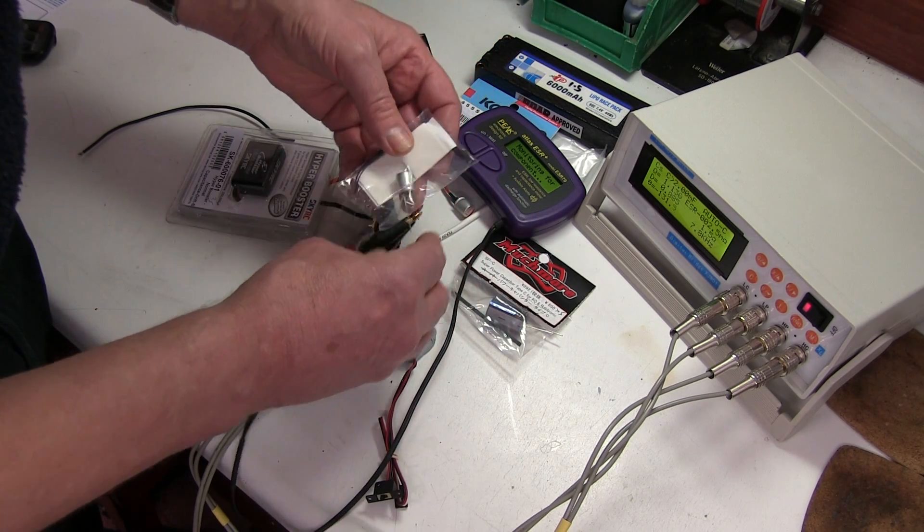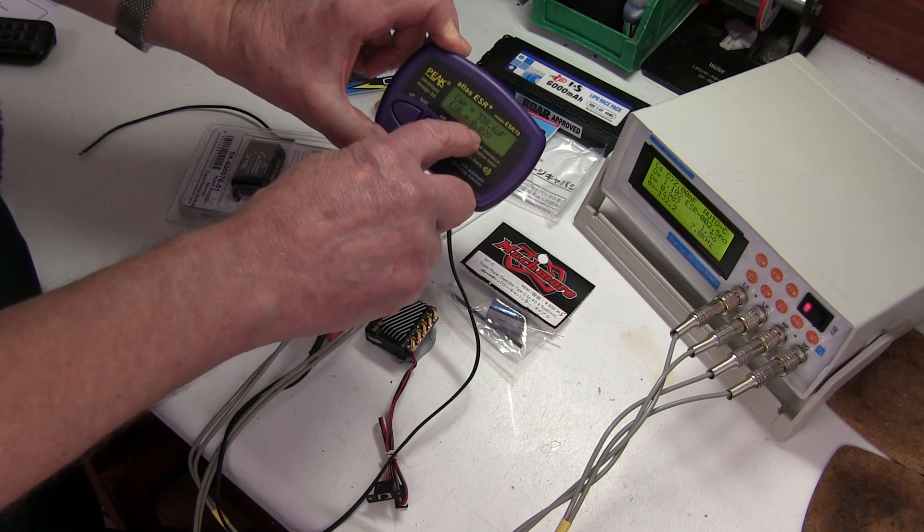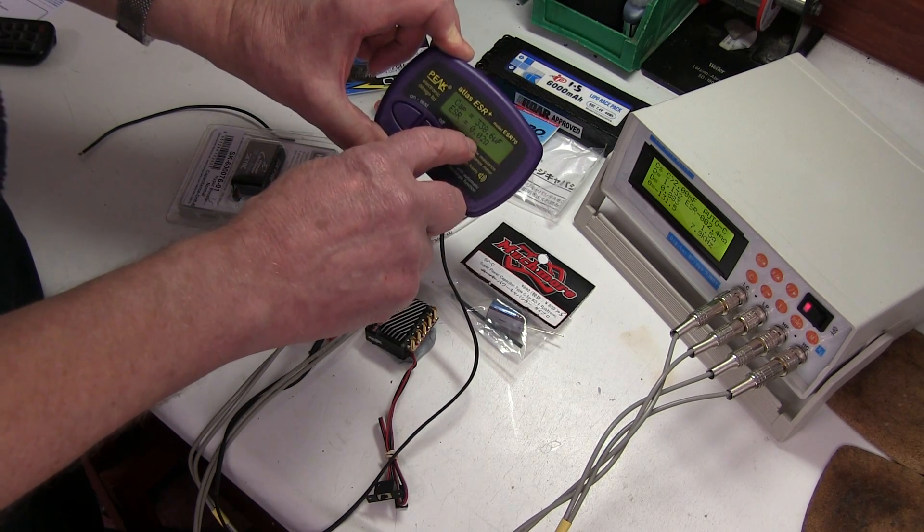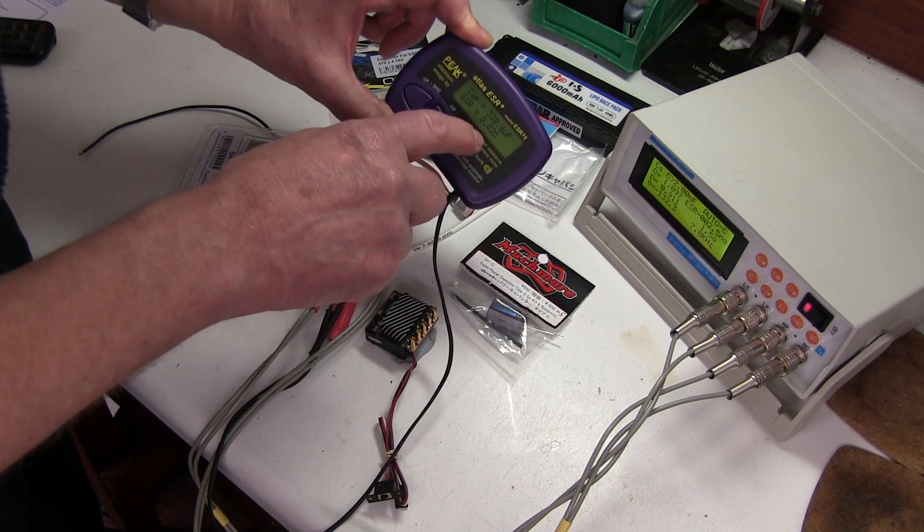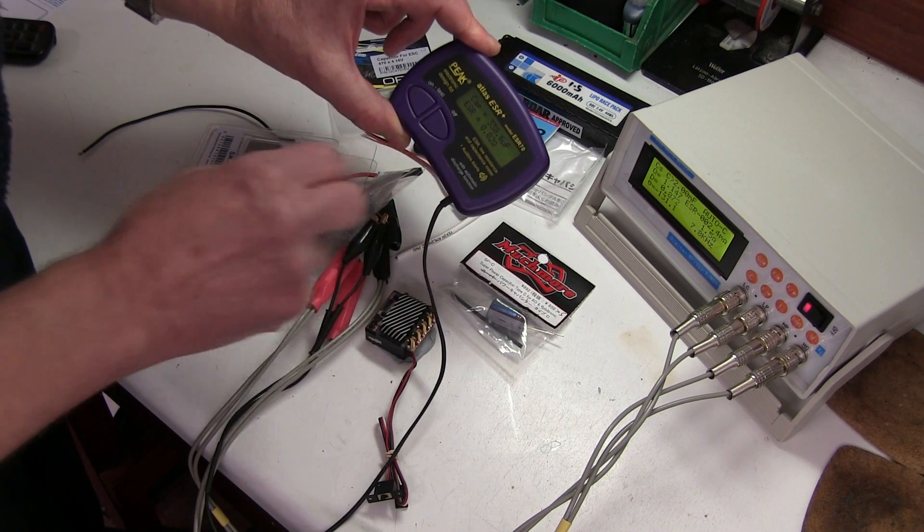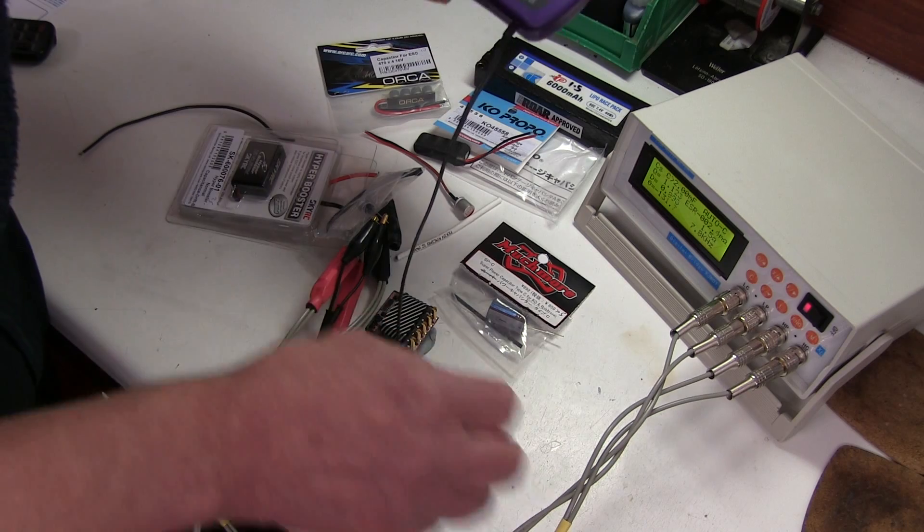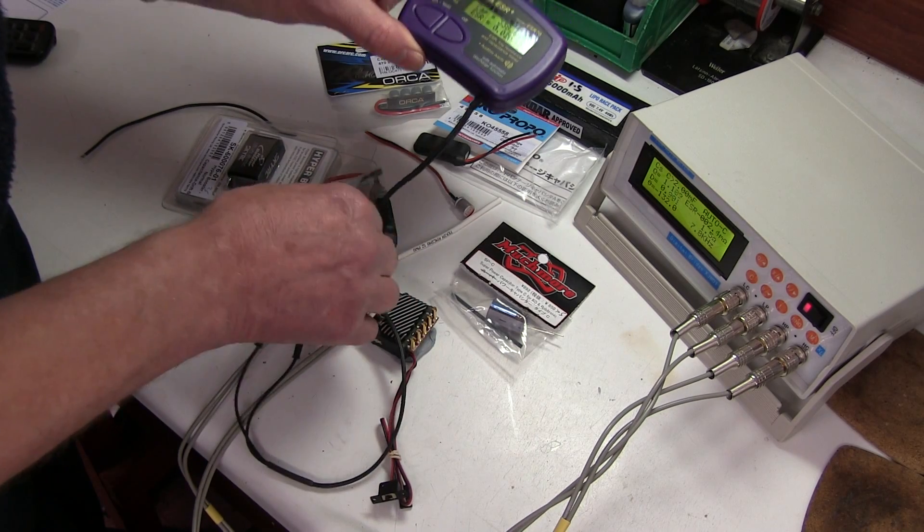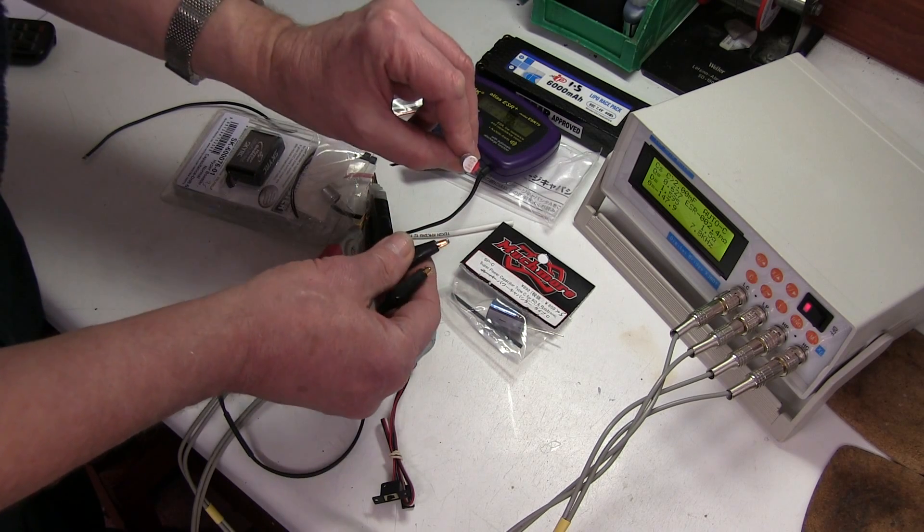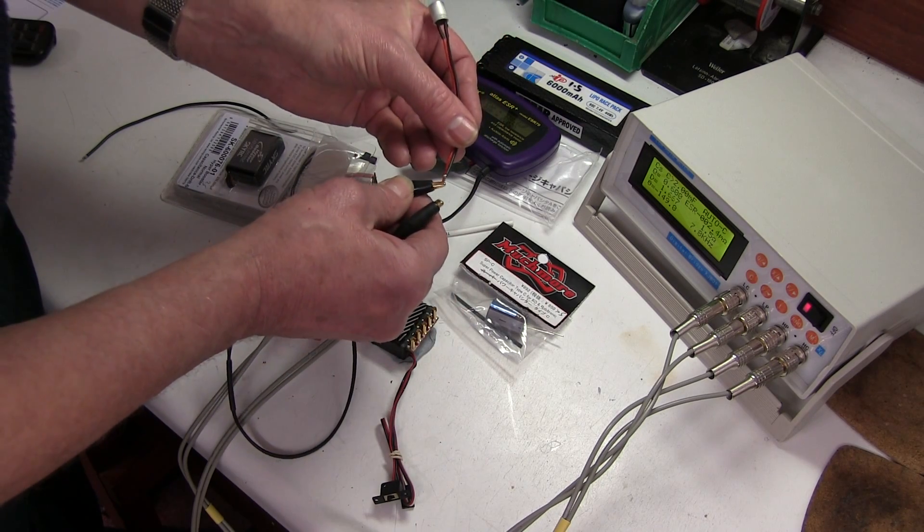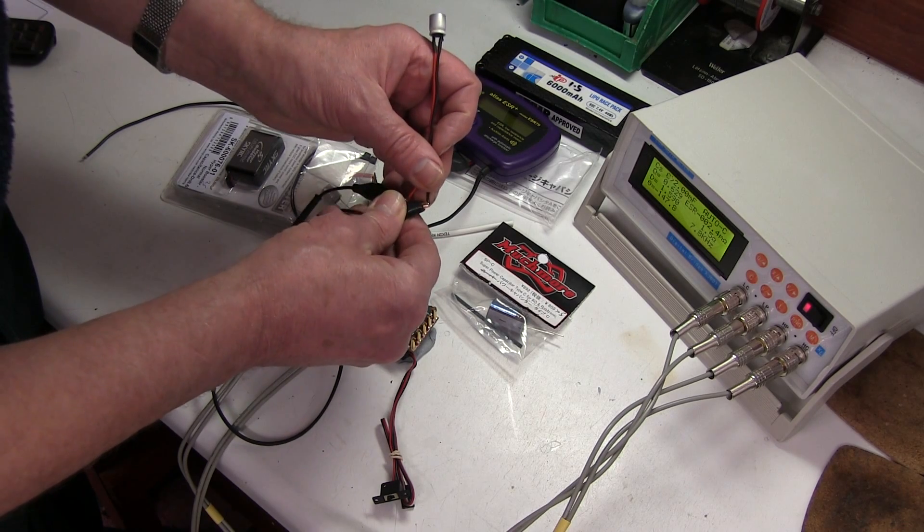Anyway, the ESR. I mean I've got ESR meters here which you can check capacitors with. And this capacitor here came with the Tekin. It's very small and it doesn't look like it's going to do anything at all. But measuring it on here, it's 0.02 ohms. That's a very very low reading for ESR, very good indeed. The lower the better. I mean zero would be perfect but that's incredibly low, so it's a really good quality capacitor and will do its job.